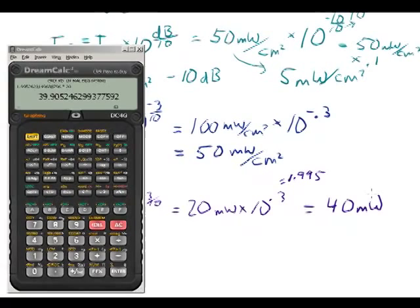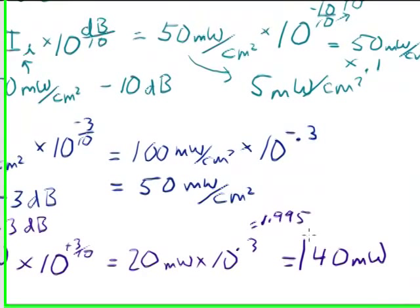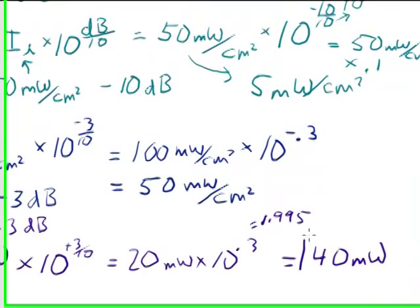Okay, so you can see that the signal, any time you use a number of an increase of 3 decibels, you essentially double the signal intensity.